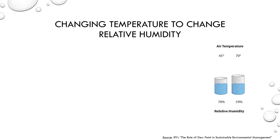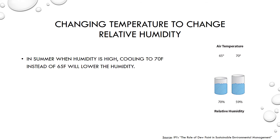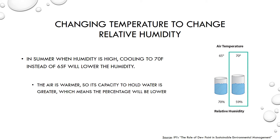When you cannot control the amount of moisture in your space, you can change the temperature to change the relative humidity. Missouri summers are hot and the humidity is high. Without removing any moisture from the air, cooling to 65 degrees with this volume of water present would cause the relative humidity to be quite high, as we can see in the diagram. Cooling to 70 degrees instead would lower the humidity because the warmer air has a greater capacity to hold water, so that same amount of moisture takes up less space at 70 degrees than it does at 65 degrees.